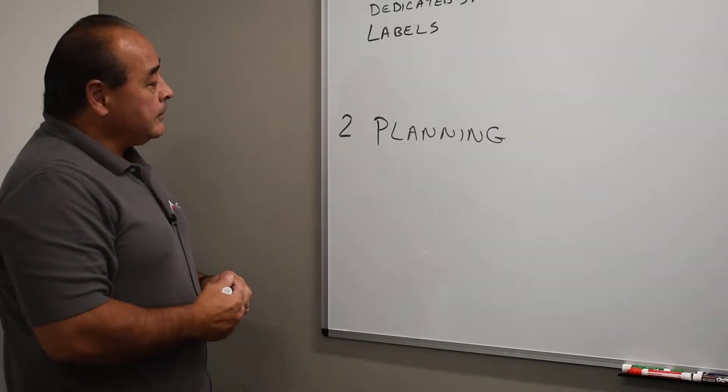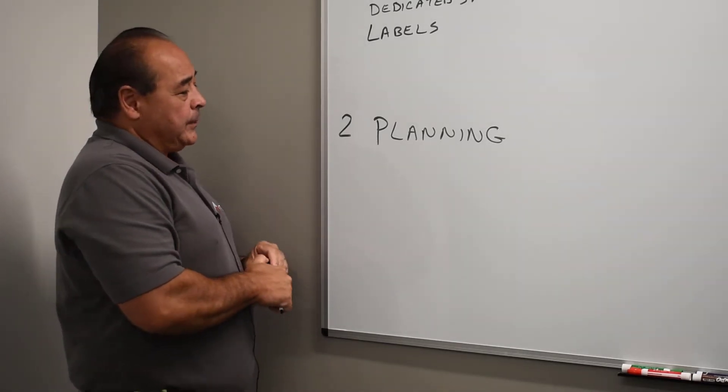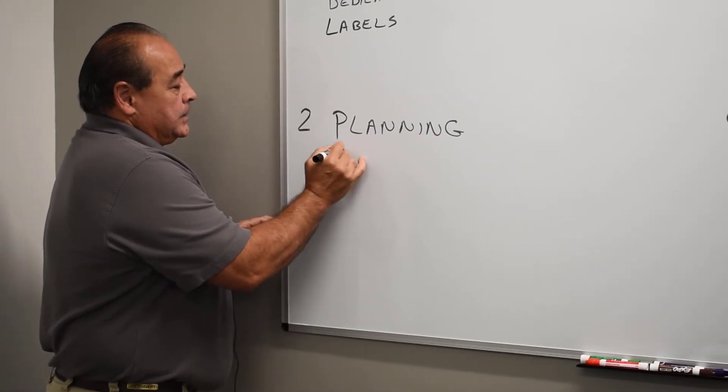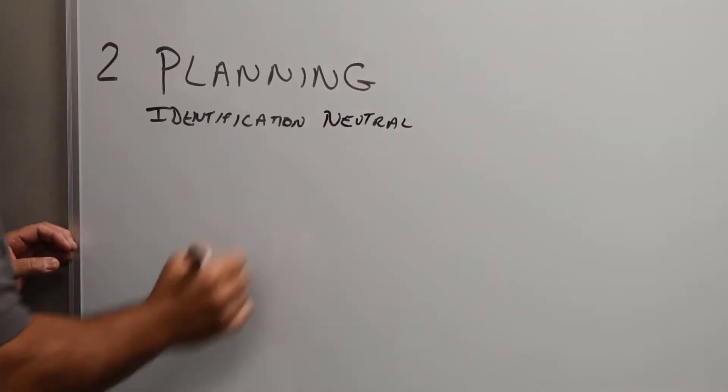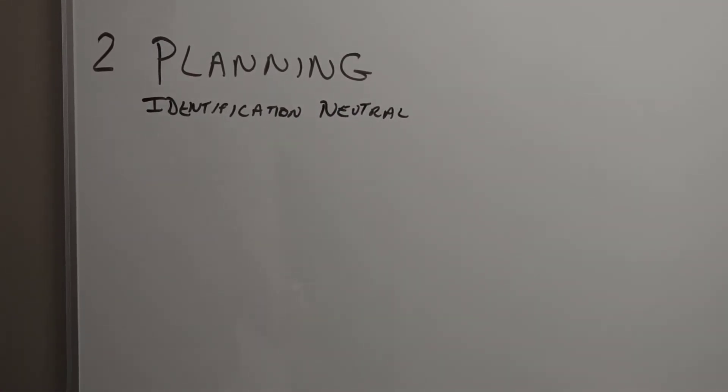One of the things about planning though kind of has some identification in it as well. So our first part of this is identification of what we call the neutral conductor. That's a very important identification because if we've got the wrong color on that, somebody terminates in the wrong place or somebody grabs it or touches it, it could be a bad thing.